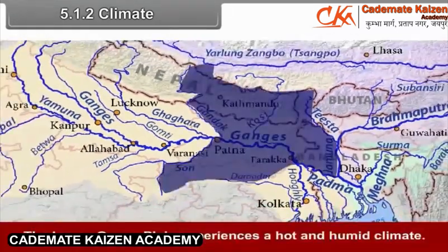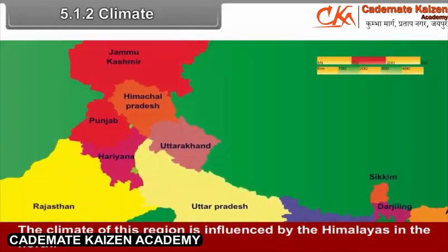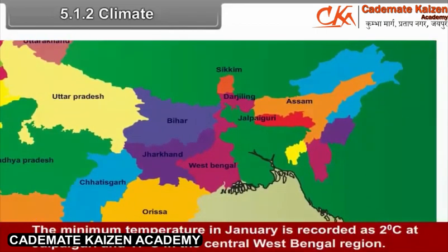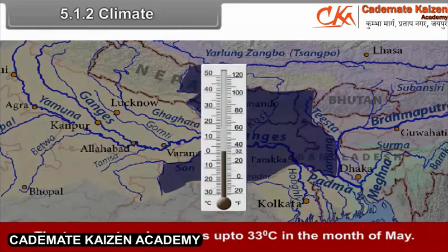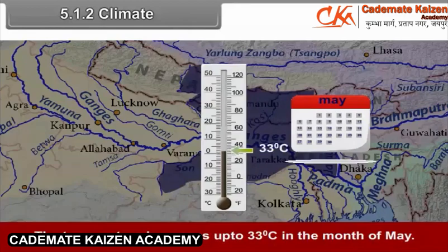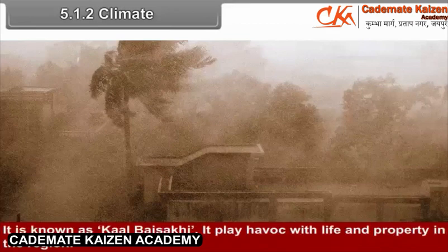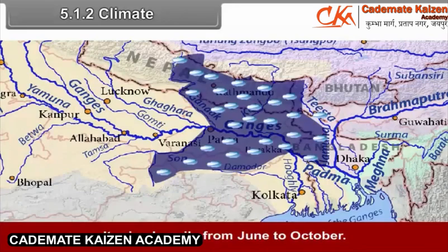The lower Ganga Plain experiences a hot and humid climate. The climate of this region is influenced by the Himalayas in the north, the Bay of Bengal in the south, and the Meghalaya Plateau in the east. The minimum temperature in January is recorded as 2 degrees Celsius at Jalpaiguri and 17 degrees Celsius in the central West Bengal region. Temperature starts rising in March, reaching up to 33 degrees Celsius in May. Heavy pre-monsoon rain occurs with thunderstorms, known as Kalbaisakhi, which plays havoc with life and property. It rains heavily from June to October.